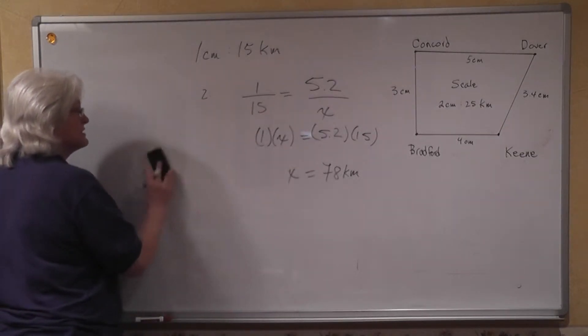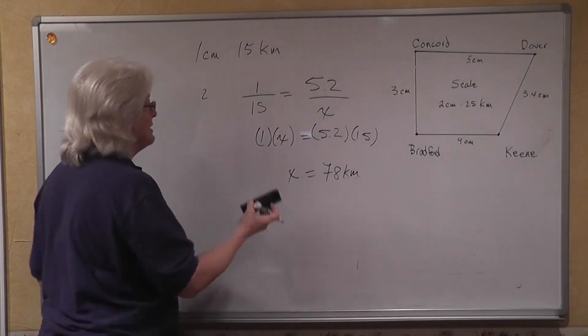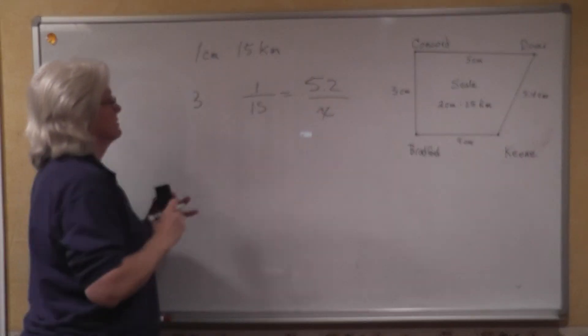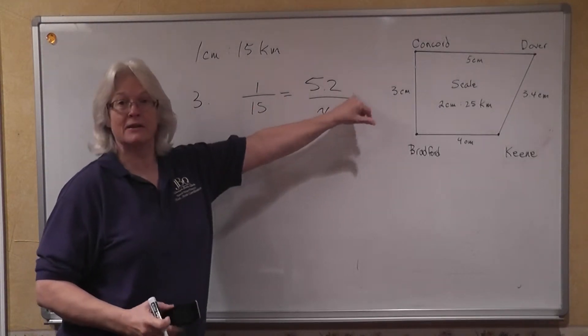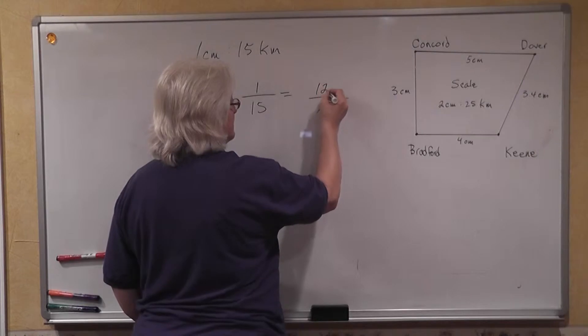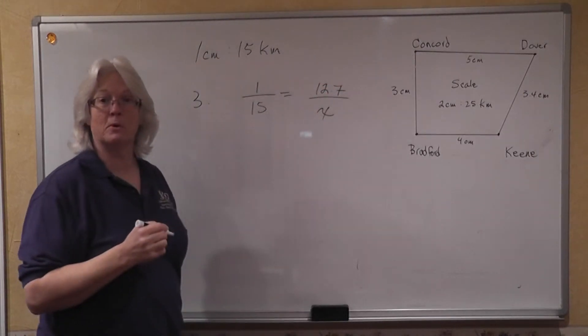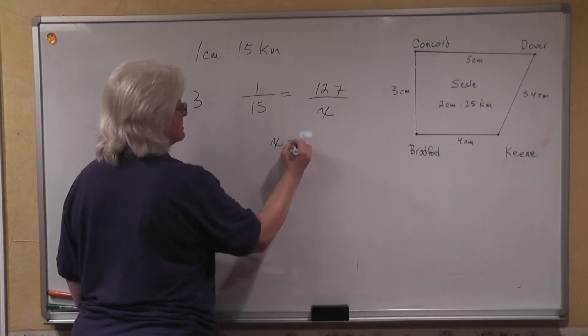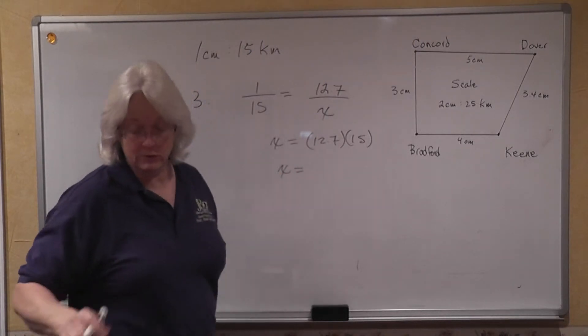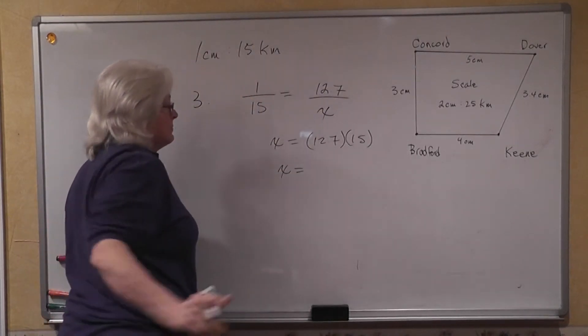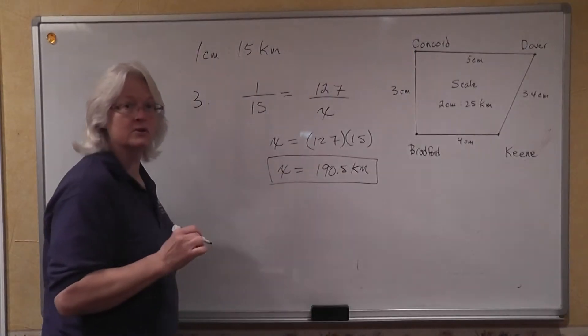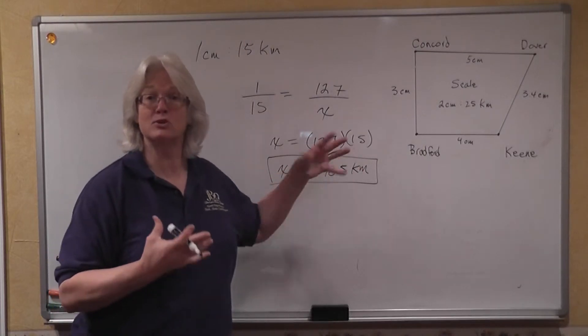Our last problem in this set is we measure a distance on the map of 12.7 centimeters. Our ratio here remains the same. Instead of it being 5.2 centimeters, the distance between those towns on the map is 12.7 centimeters. We cross multiply again. One times x equals 12.7 times fifteen. You go ahead and do your multiplication, and you end up with 190.5 kilometers being the distance between those two towns.